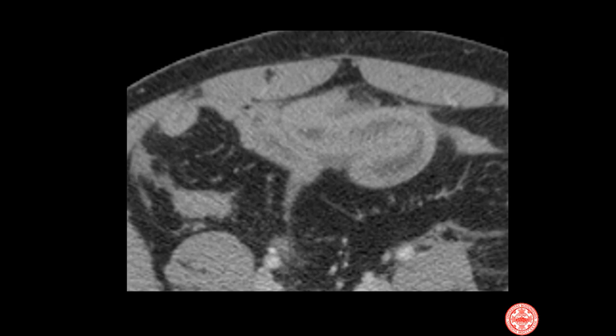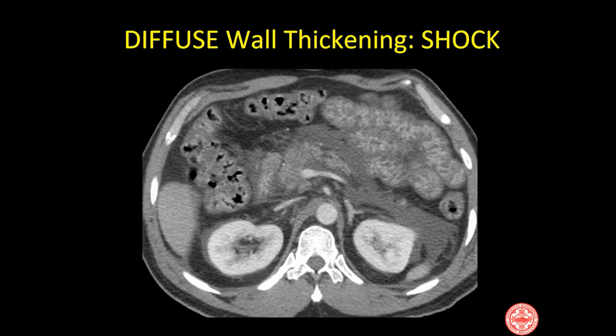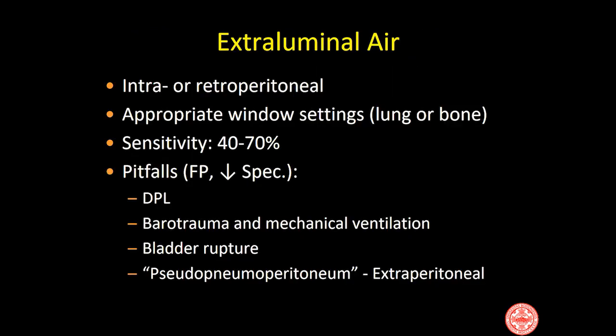Another patient with similar findings of bowel wall thickening and stranding in the mesentery. On the other hand, this is not bowel trauma — notice the diffuse thickening and hyperenhancement in the wall of these loops of jejunum with fluid in the third spaces, intraperitoneal and retroperitoneal: typical appearance of shock bowel in someone who had absolutely no sign of bowel trauma but had hypovolemic shock from lower extremity fractures.